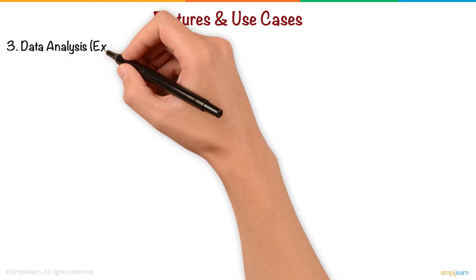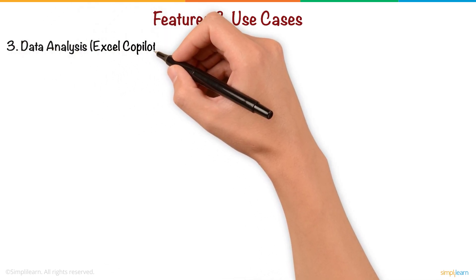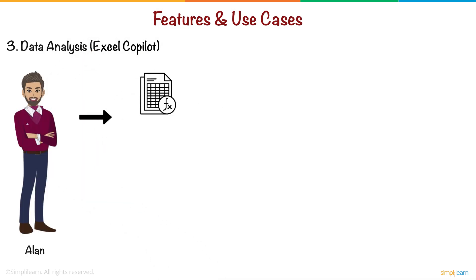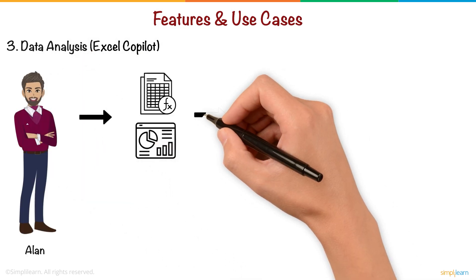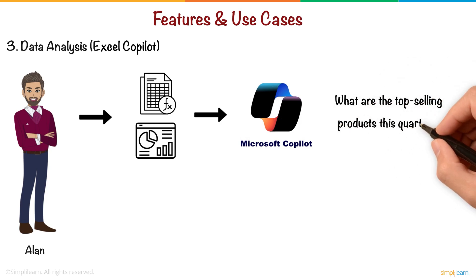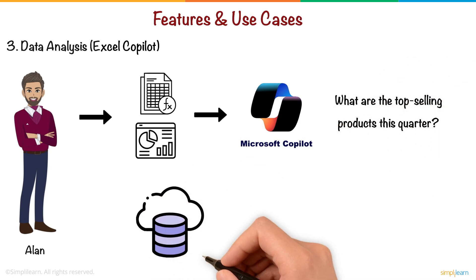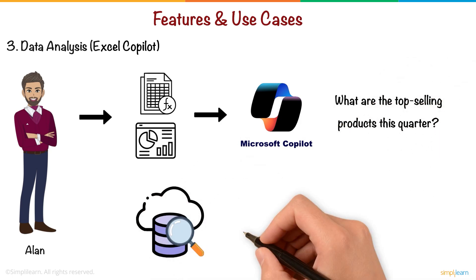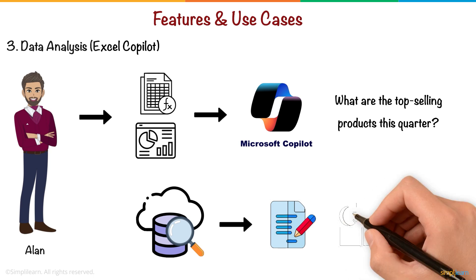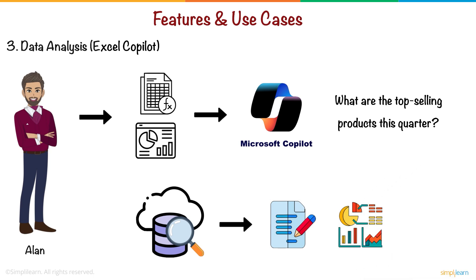Feature 3: Data Analysis — Excel Copilot. Alan struggles with Excel formulas and data visualization. He asks Copilot, "What are the top-selling products this quarter?" Copilot scans the data, generates a summary, and even suggests charts for presentations.